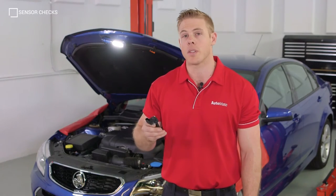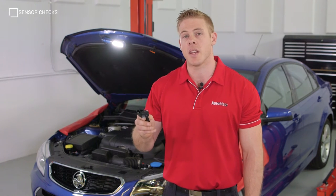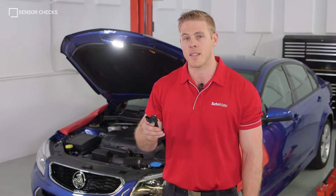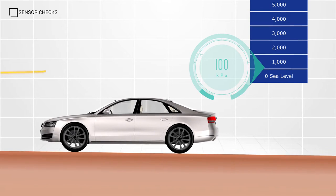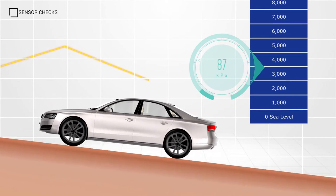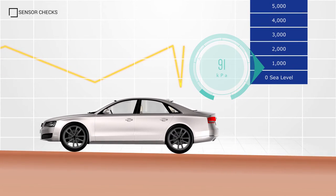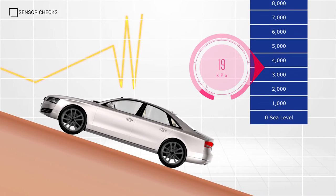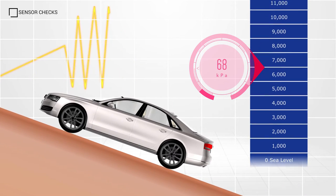Signal erratic and performance codes typically set because the signal data from the sensor does not follow a predefined pattern set by the ECM. The ECM would expect to see barometric pressures rise and fall in a linear fashion. If the signal from the sensor fell outside these parameters for a predetermined time, the ECM would lock a performance or erratic code.